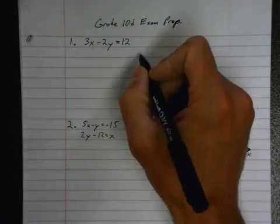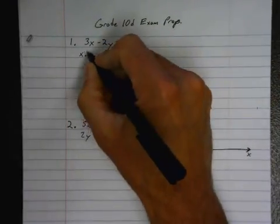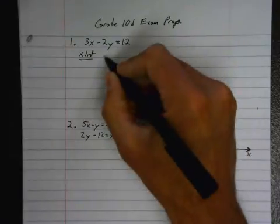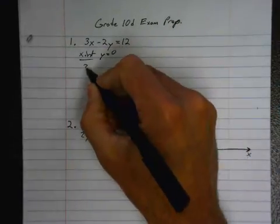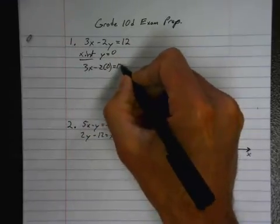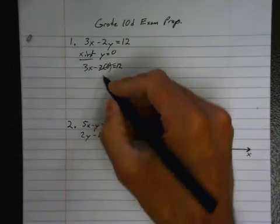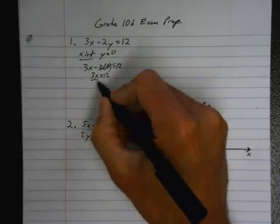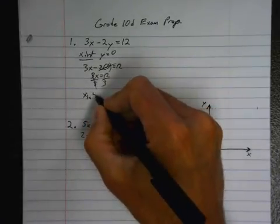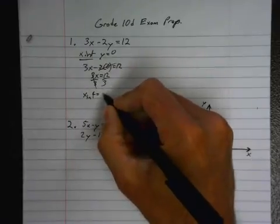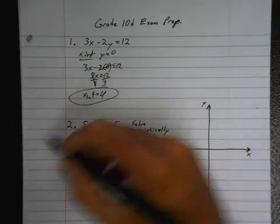First of all, that question, x-intercept. To find the x-intercept, we set y equal to 0, so you get 3x minus 2(0) equals 12. That goes to 0. So 3x equals 12. Divide by 3, and your x-intercept equals 4.